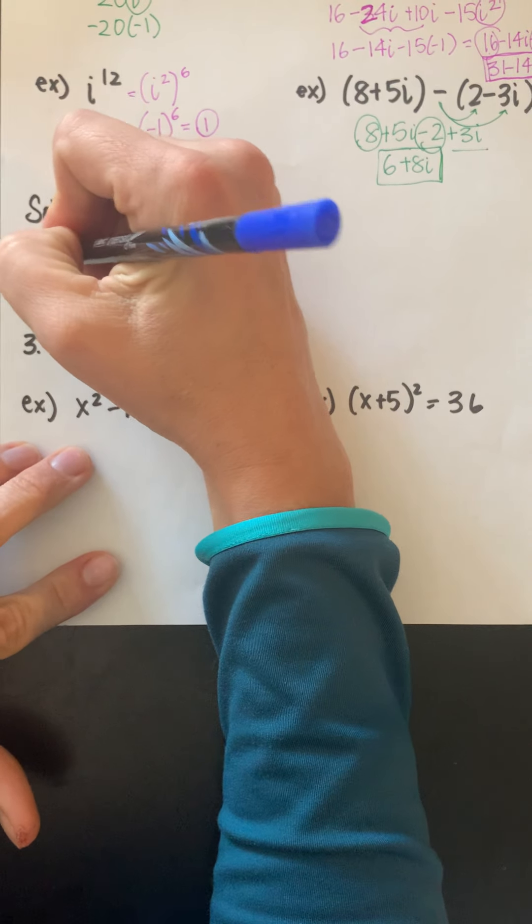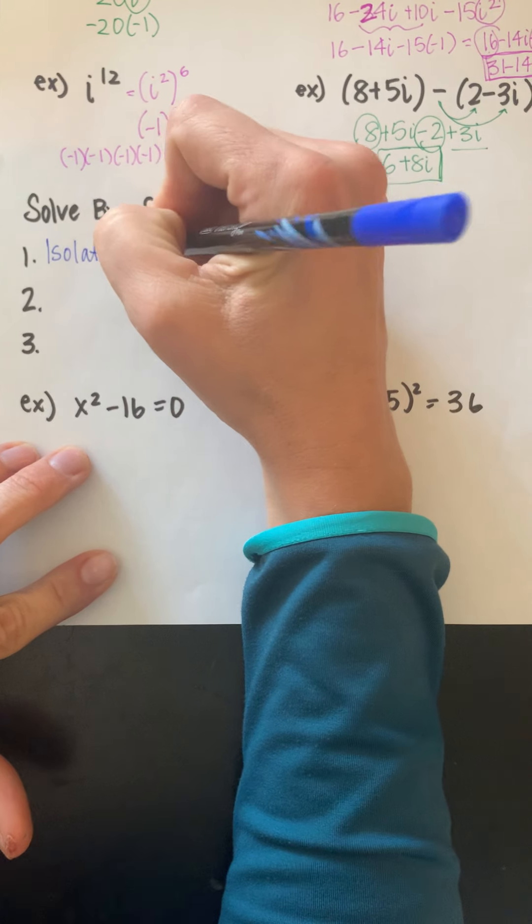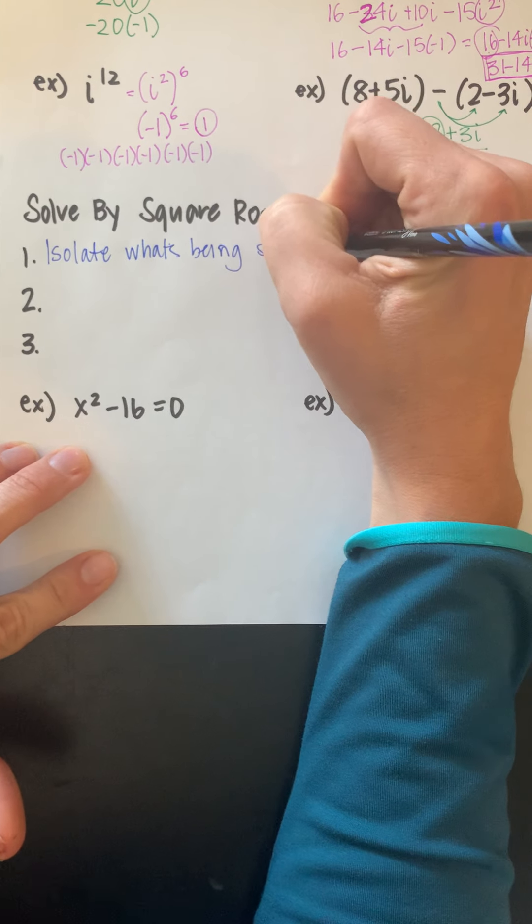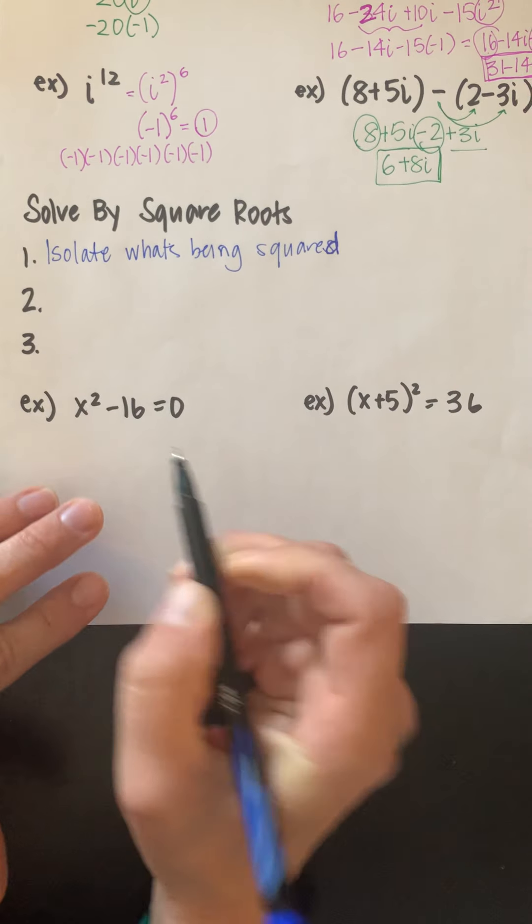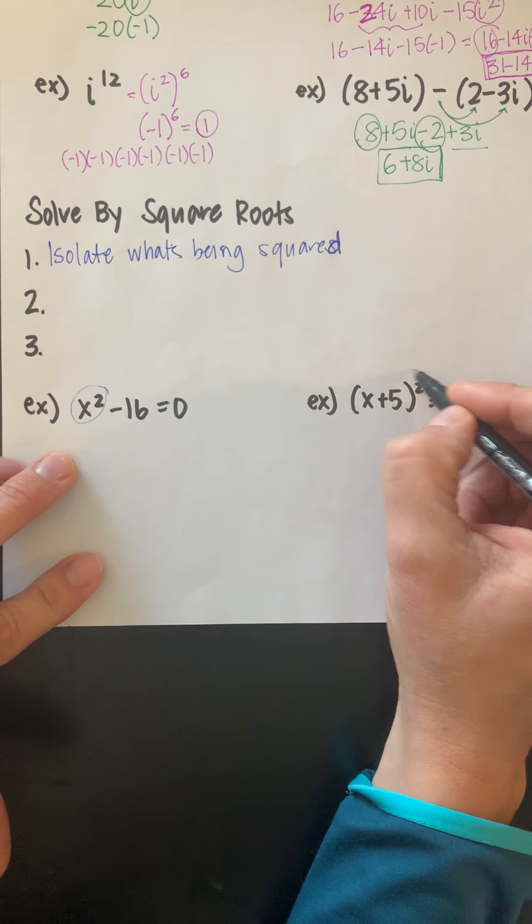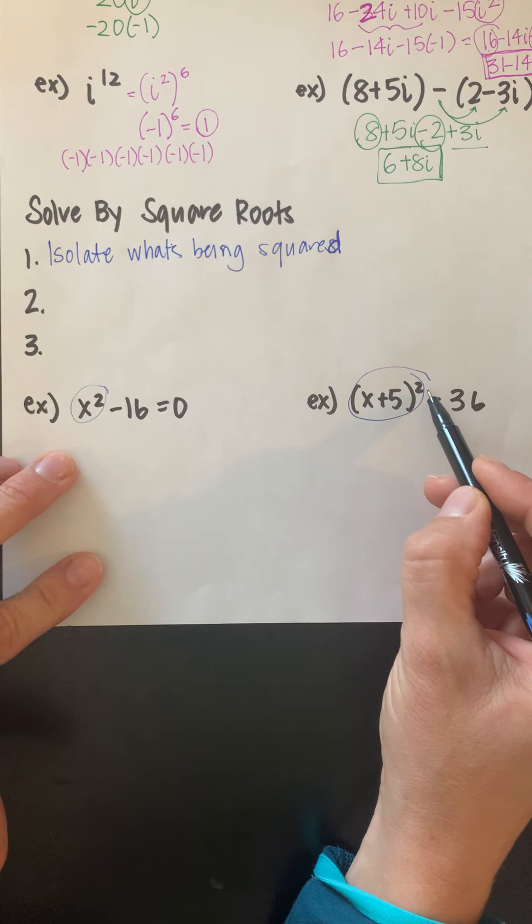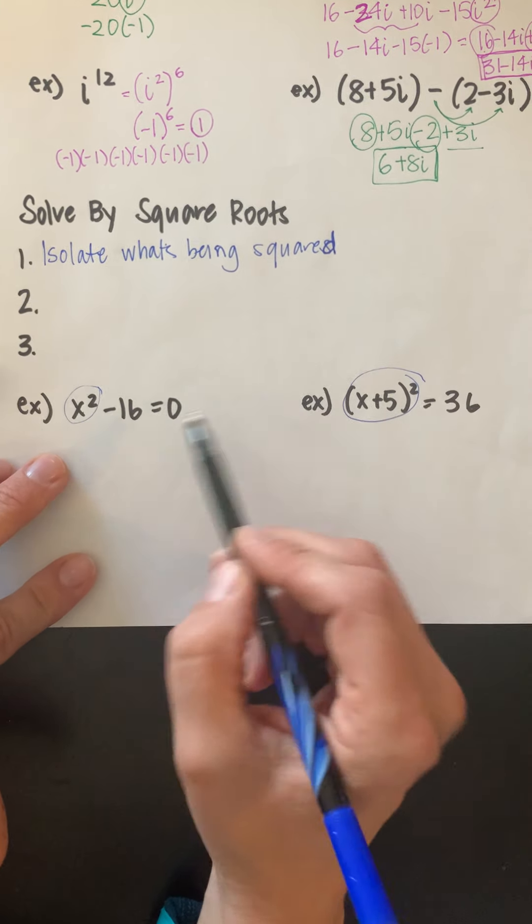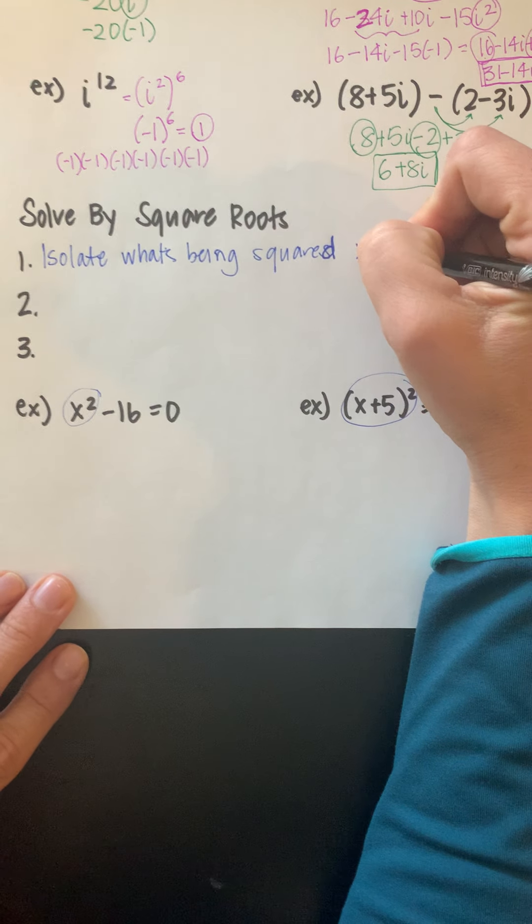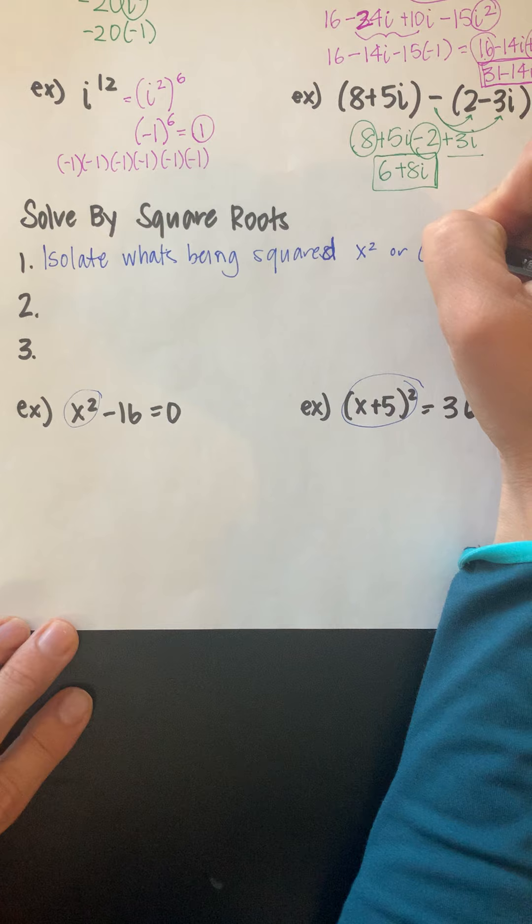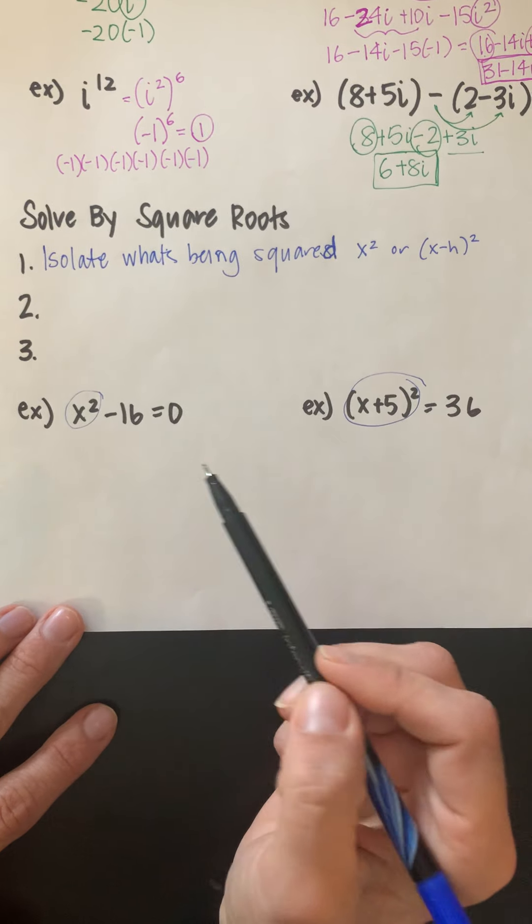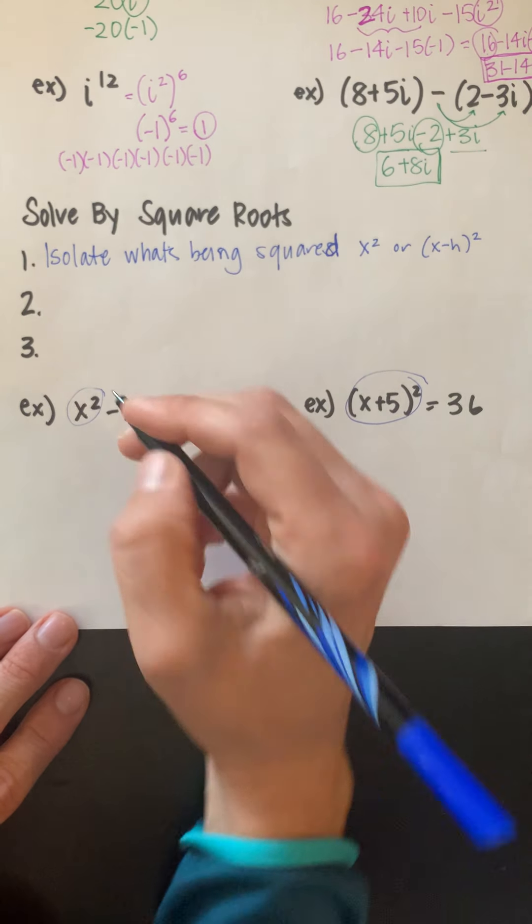You want to isolate what's being squared. So what I mean by that is there's two different things being squared here. Here there's an x² being squared, so that's the way to isolate it. But here, the x plus 5 is being squared. So we want to isolate whatever's being squared, regardless of if it's a set of parentheses or just a single x. These are kind of the two types. We're going to isolate that.